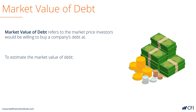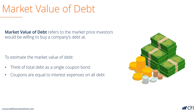To estimate the market value of debt, we need a formula. Think of all of the debt as a single coupon bond for the company. The coupons are equal to the interest expense on the company's income statement from all of its debt. The maturity is the weighted average maturity of all the different types of debt that the company has.